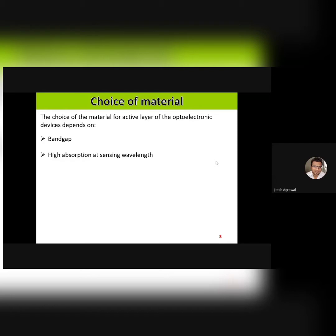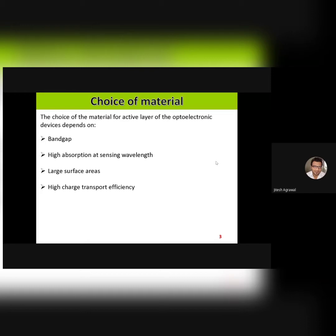Second thing is, especially in the case of photodetectors, the absorption coefficient of the material should be quite high; otherwise it won't be able to sense weak signals. The next important thing is a larger surface area of your material, because whether it is an LED or a detector, the surface area is very important as it is the most sensitive part of the material. If you have a larger surface area, your device can easily detect incident photons. High charge transportation efficiency is also very critical. Suppose you have obtained electron-hole pairs at the depletion region in the p-n junction, but if they are not able to transport to the respective electrodes, you won't get any output signal. Therefore, the material should have high charge transport efficiency so that mobile charge carriers can reach the respective electrodes.